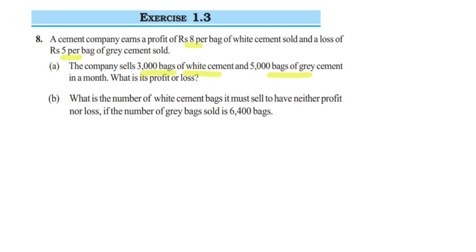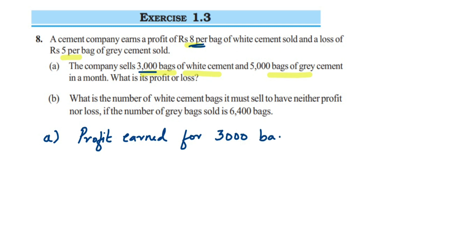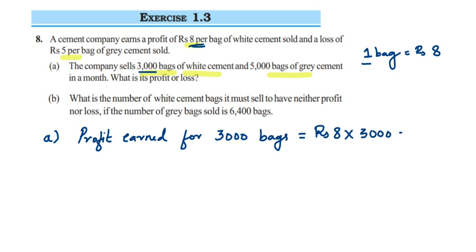Let's calculate the first question. First, we calculate the total profit they're earning. Profit earned per bag is 8 rupees, so for 3,000 bags it will be 3,000 multiplied by 8, which equals rupees 24,000. So they're getting a total profit of 24,000.